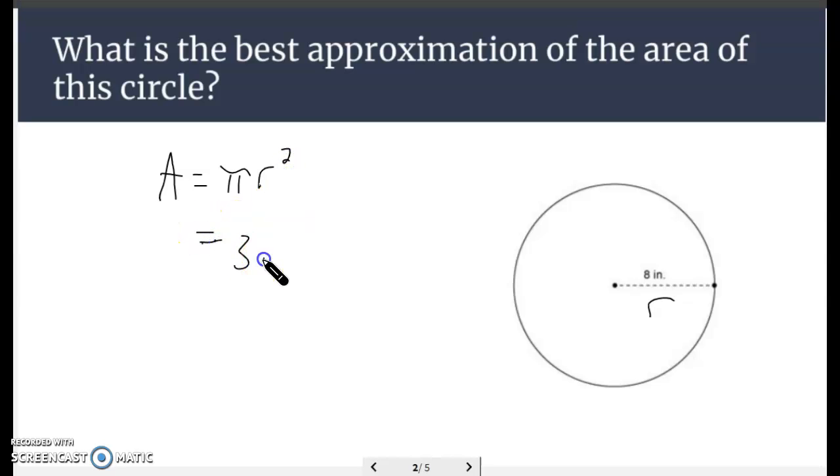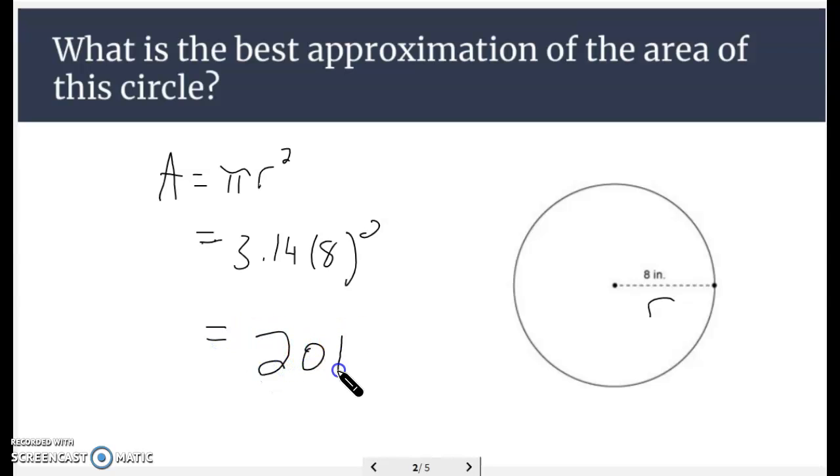So we have 3.14 times 8 squared, 64 times 3.14, equals 200.96. We're going to round that to 201.0 square inches.